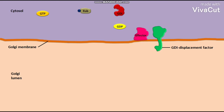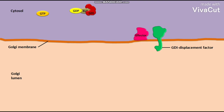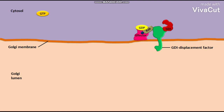The modified Rab then binds to a GDP. The cytosolic GDI then binds to the inactive GDP-modified Rab complex, keeping it in the Rab-GDP state. The GDI-GDP-modified Rab complex then binds to a nonspecific GDI displacement factor present in the membrane. This nonspecific GDI displacement factor then removes the inactive Rab-GDP from the GDI and inserts it into the membrane.